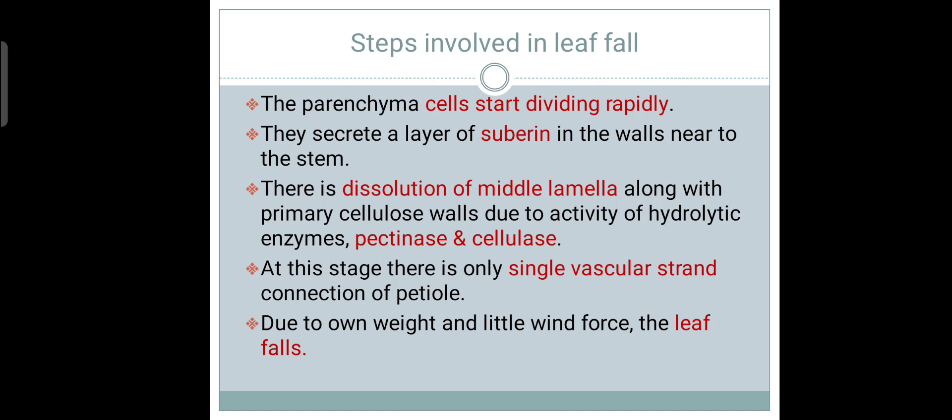What are the steps involved in Leaf Fall or Leaf Obsession? First of all, the parenchyma cells start dividing rapidly, as we have discussed in the separation layer structure. Then there is secretion of a layer of suberin in the walls near to the stem. There is dissolution of the middle lamella, which is the major part that initiates the process of leaf obsession, along with primary cellulose walls, due to activity of hydrolytic enzymes like pectinase and cellulase.